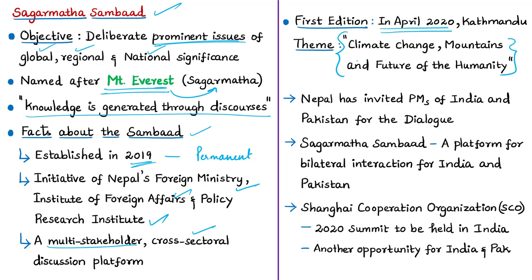Since this dialogue involves heads from different states and governments, it could also become a platform for bilateral interaction among leaders. This dialogue is important for India because both Indian and Pakistani Prime Ministers are invited, which might help reduce the hostility between the two countries, currently at an all-time high. Additionally, the Shanghai Cooperation Organization's 2020 Summit will be held in India, where India has also invited all SCO member country heads including Pakistan. The Sagar Mata Sambad thus provides another opportunity for bilateral talks between India and Pakistan.